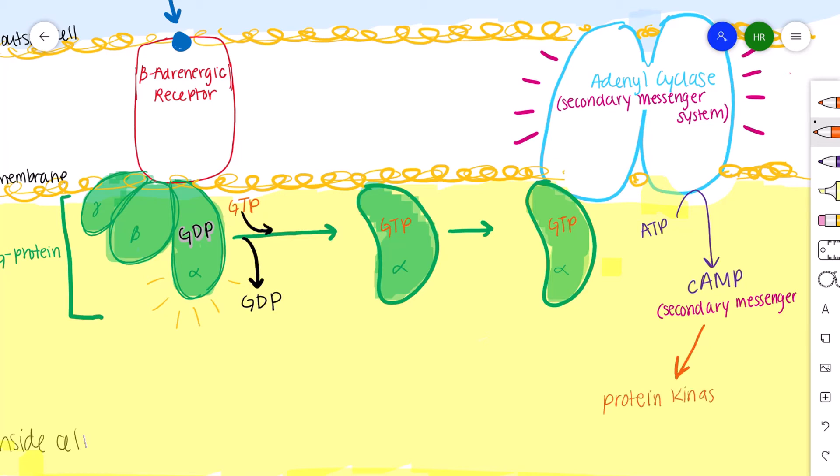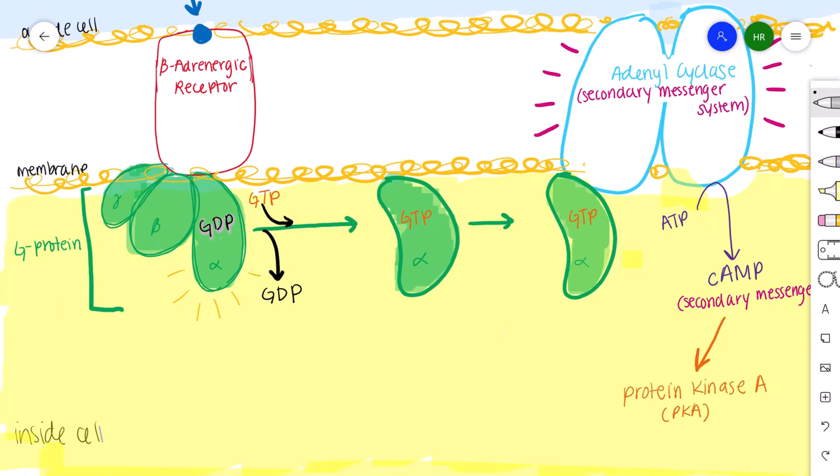The cAMP molecules can then bind to another enzyme called protein kinase A. PKA is extremely important because this ultimately activates the enzyme glycogen phosphorylase.